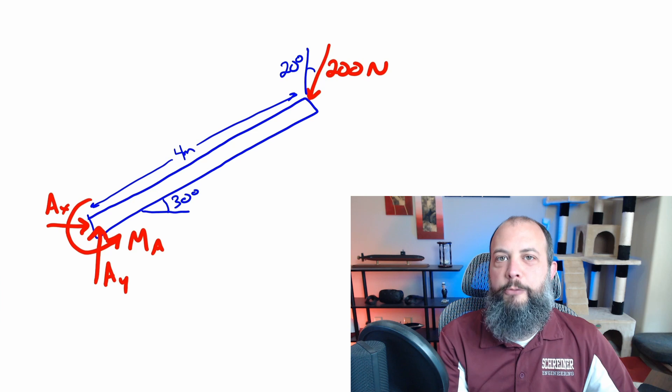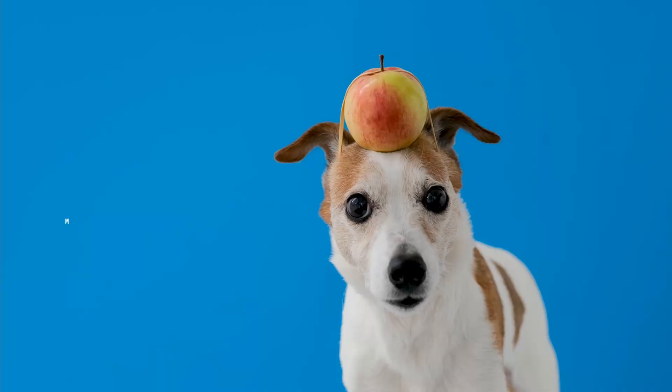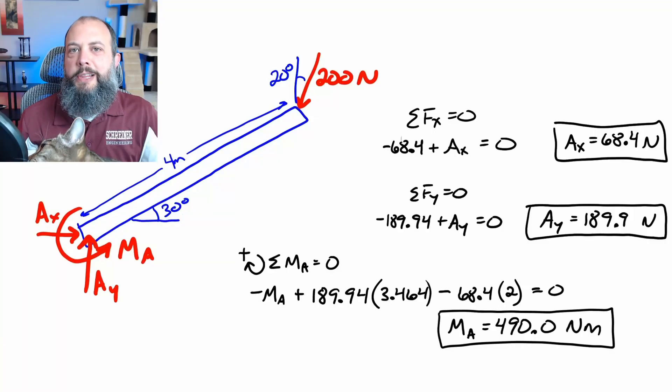So to formally solve this problem, I've drawn a free body diagram where I've replaced the fixed joint at A with forces in the X and Y direction, and also a moment because a fixed joint resists forces in X and Y and moments. So I've got the final answer up on the screen, and the reaction forces at AX and AY are just equal to the X and Y components of that 200 Newton force.